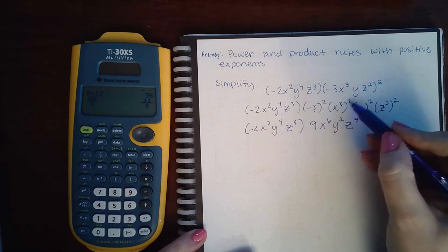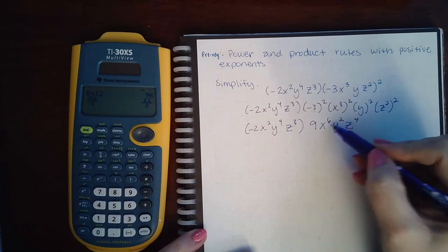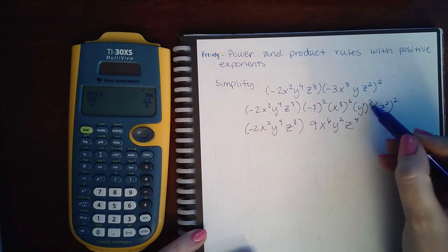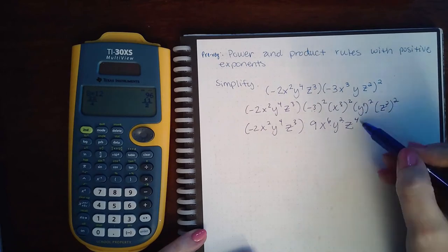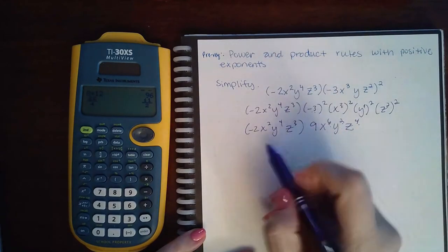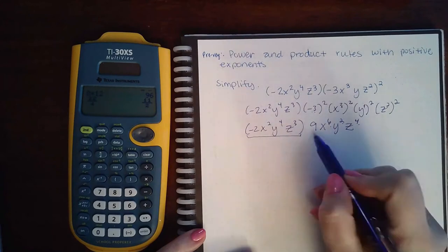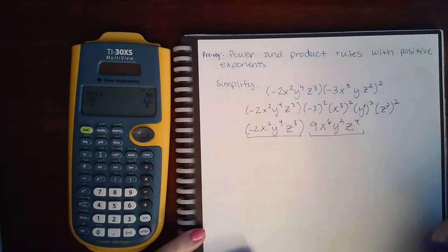When you have a power raised to a power, you do multiply those together. A power raised to a power, multiply. Then now I need to take this expression and multiply it by this expression.